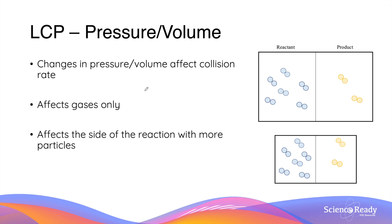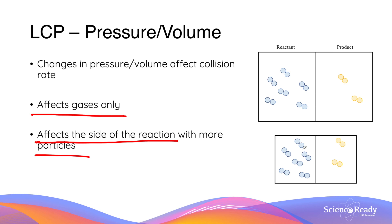The next factor is changes in pressure and volume, which affect collision rate as well. It is important to note that pressure and volume changes affect gases only. In addition, they also affect the side of the reaction that has more gas particles. This diagram is to remind you that when we have a reduction in volume or an increase in pressure, the side of the reaction that has more gas molecules or particles will always be affected more than the side that has less particles or molecules.